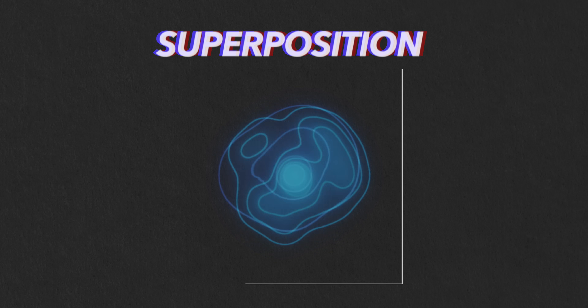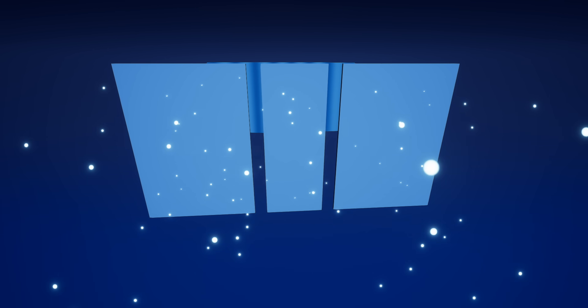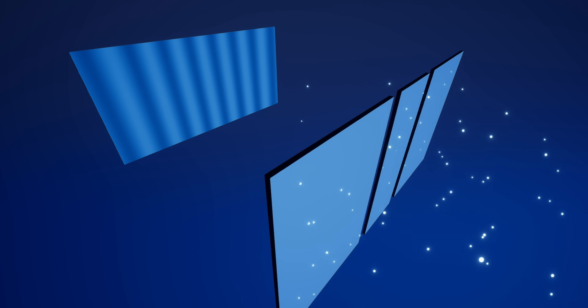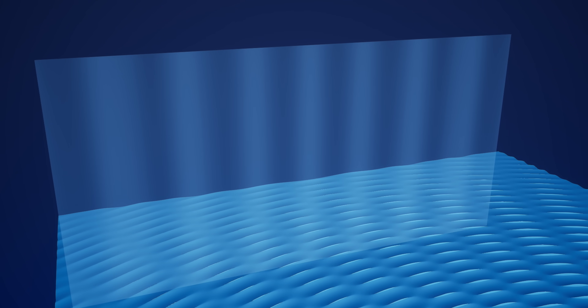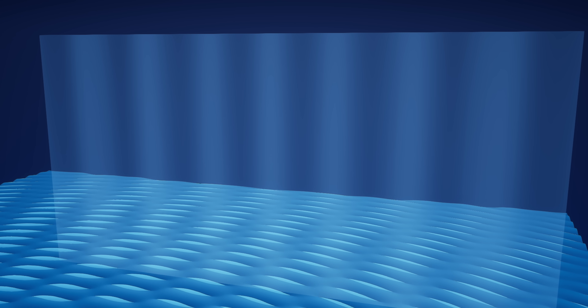Superposition is the idea that quantum objects can be in two different states at the same time. This seems crazy and something we'd never observe, but we do — indirectly — with the double slit experiment. Fire individual electrons through two slits at a screen, and the pattern you see is not just the sum of electrons going separately through one slit and the other. It is an interference pattern. We are forced to conclude that a single electron somehow goes through one slit and the other slit simultaneously — this is superposition. It's easy to understand with waves: they are spread out in space, and the peak from one slit cancels with the trough from another to produce the interference pattern. The wave function allows individual electrons to pass through both slits at the same time. So superposition is on solid ground.